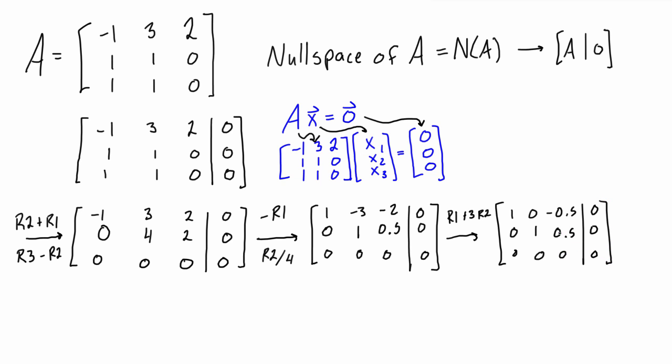So we have it in reduced row echelon form now and we can rewrite it back as a system of linear equations. We can write this as x1 minus 0.5 times x3 equals zero - that's this first line - and then the second line is x2 plus 0.5 x3 is also equal to zero.